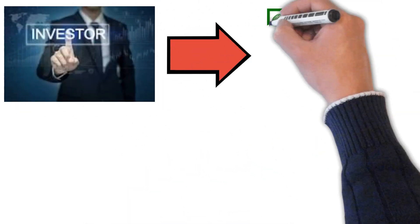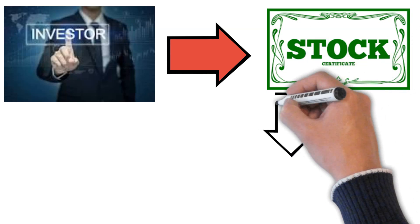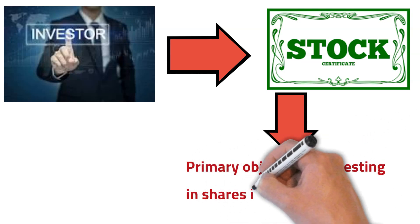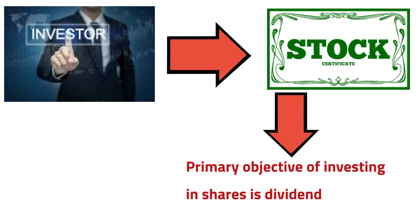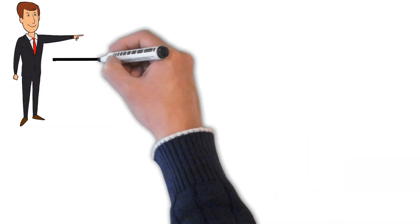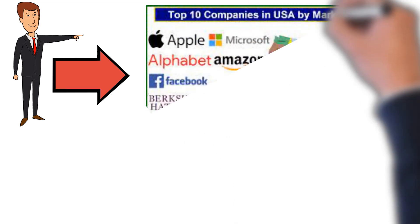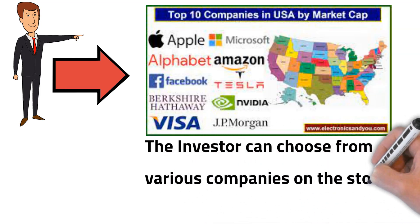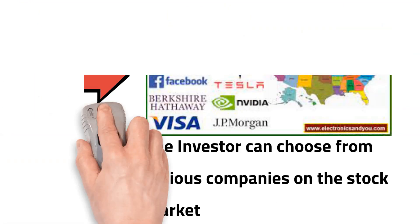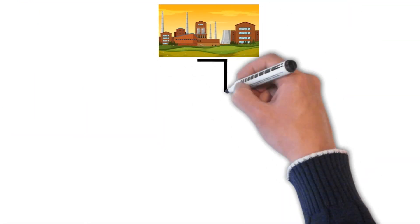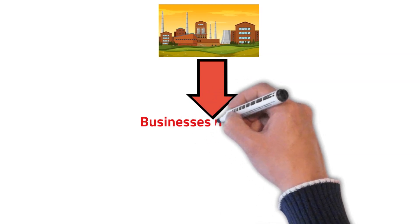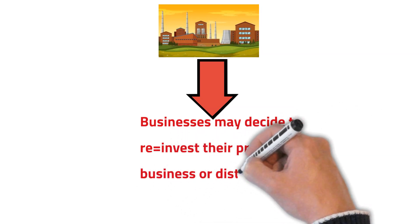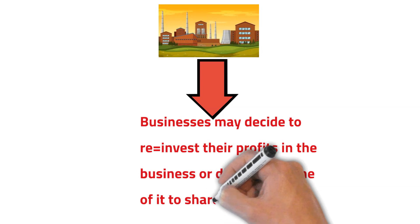Maybe you are an investor and you have some cash to spare which you want to invest on the stock market. The primary objective of investing in shares or stock is dividend. You can choose from various companies listed on the stock market. These businesses may decide to reinvest their profits back into the business, or alternatively distribute some of it to shareholders.